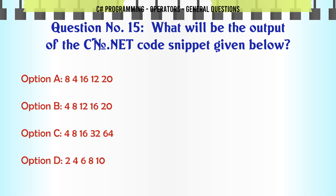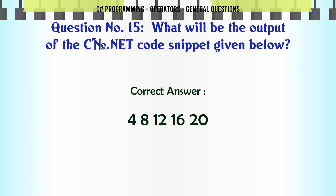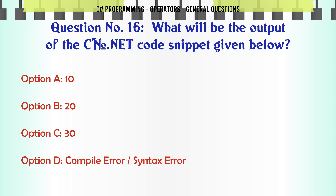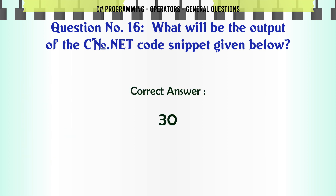A: 8th April 2016, 12:20. B: 4th August 2012, 16:20. C: 4th August 2016. The correct answer is C: 4th August 2016. What will be the output of the C.NET code snippet given below? A: 10. B: 20. C: 30. D: Compile Error / Syntax Error. The correct answer is 30.